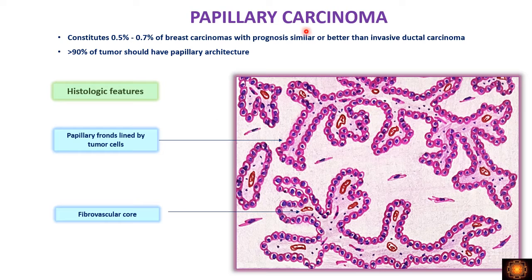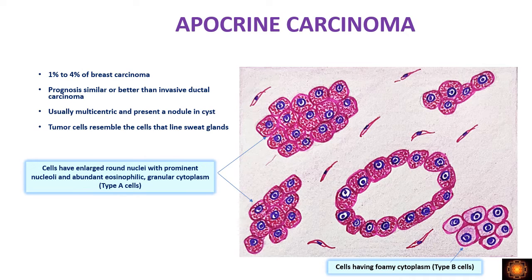Papillary carcinoma is very rare, comprising 0.5–0.7% of breast carcinomas. A papillary pattern can be found in normal invasive breast carcinoma, but we can only call it papillary carcinoma when the papillary pattern is present in more than 90% of the tumor — similar to mucinous carcinoma. Microscopically, we see predominantly papillary fronds lined by tumor cells, and the papillary fronds have a fibrovascular core.